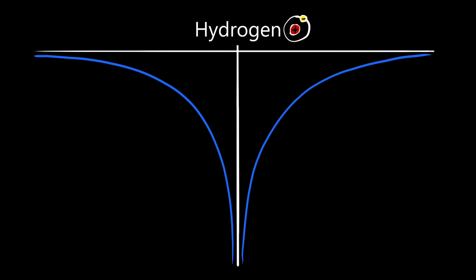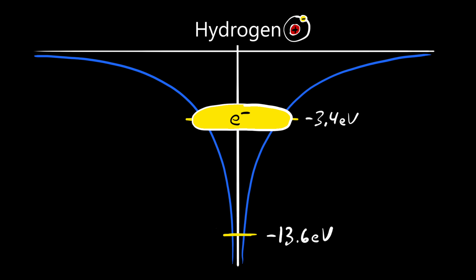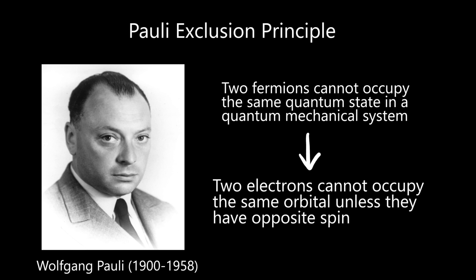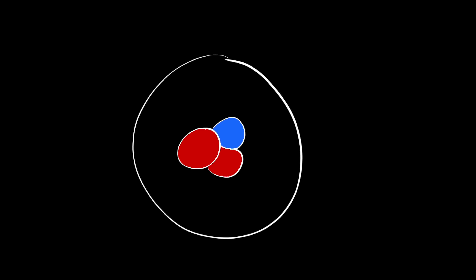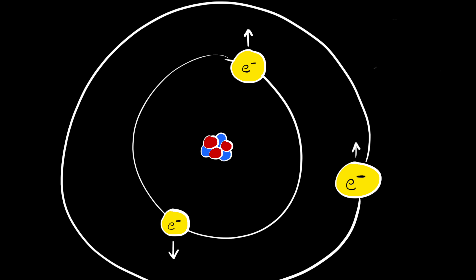Next, electrons bound by an atom cannot exist at any arbitrary energy level — they can only have specific energy values. For the hydrogen atom, an electron can have negative 13.6 eV or negative 3.4 eV, but it is physically impossible for it to have an energy level between those two values. Electrons can only gain or lose energy in quantities that move them to a different allowed energy level — for example, the electron at negative 13.6 eV must gain exactly 10.2 eV to move to the next level. Lastly, electrons must obey the Pauli exclusion principle: up to two electrons can occupy a given orbital, but only if they have opposite spin.